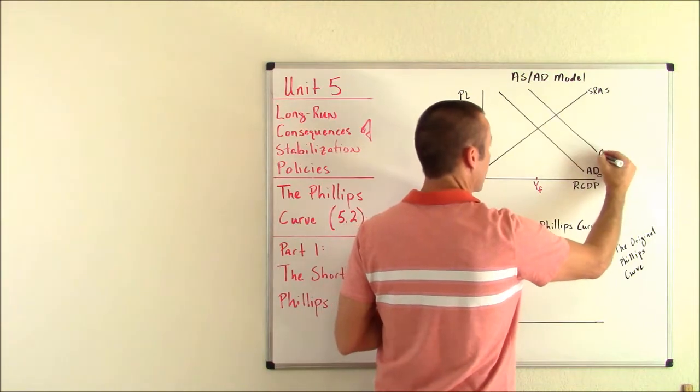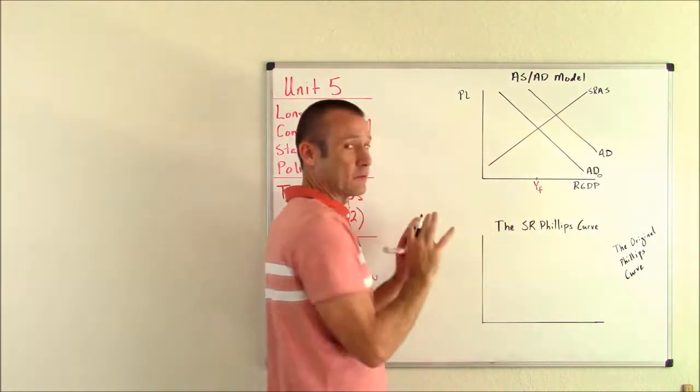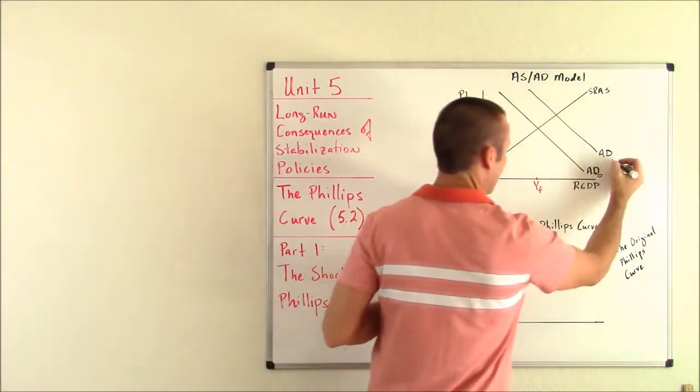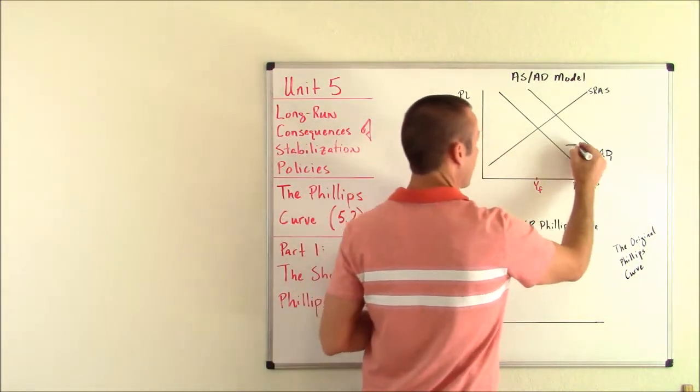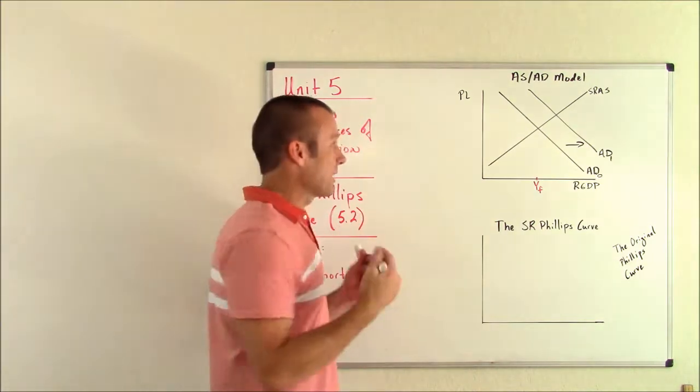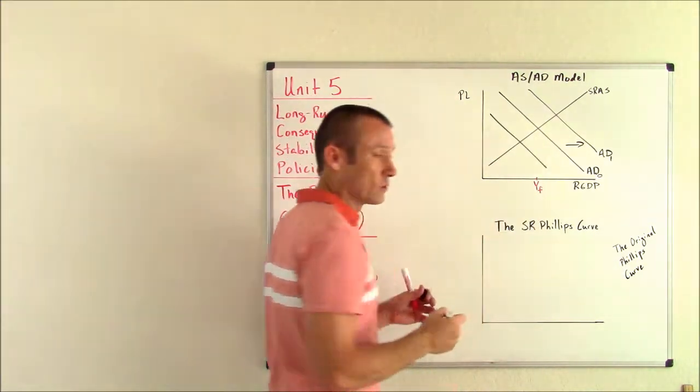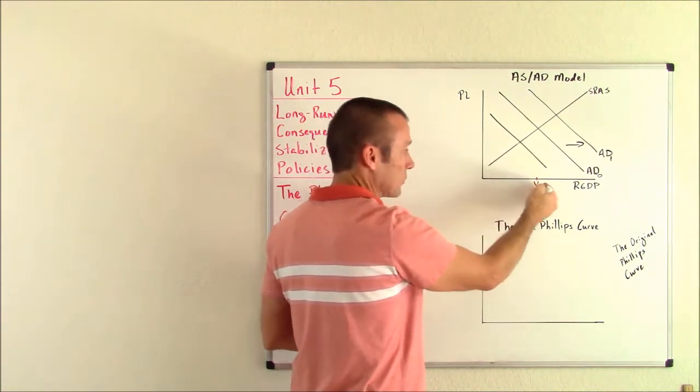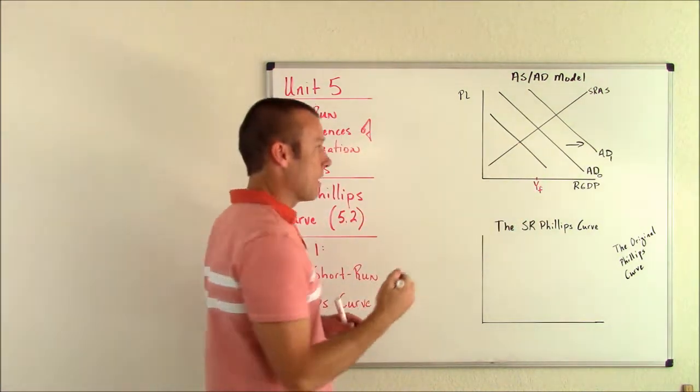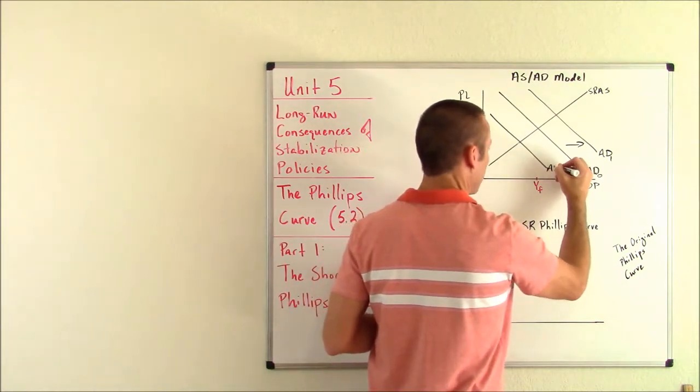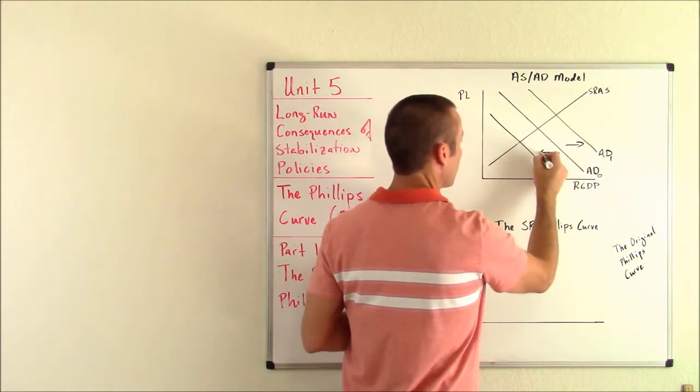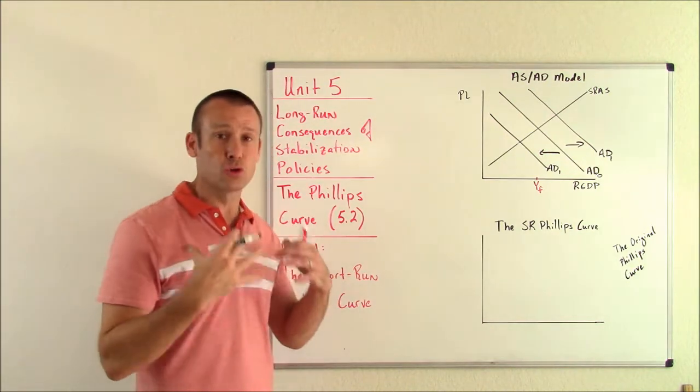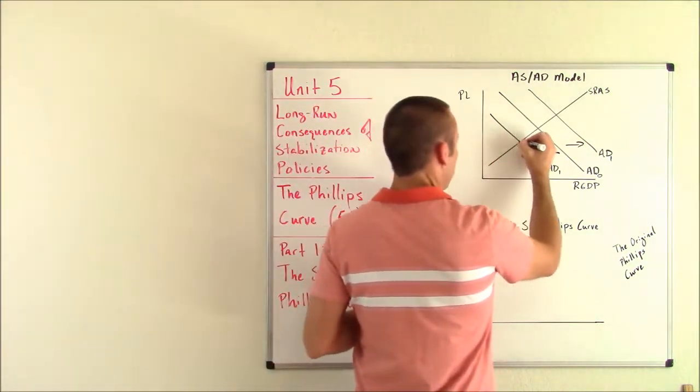We should think about aggregate demand shifting around. Sometimes it shifts to the right - that would be boom times, that would give us an output above Yf, we would have an inflationary gap. Other times aggregate demand shifts to the left when we go into a recession, we get an intersection point that is less than full employment output.